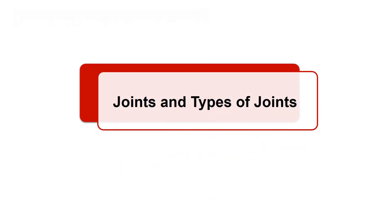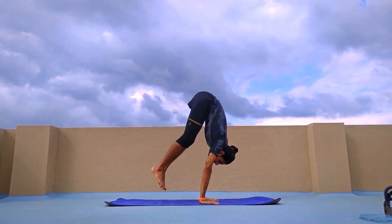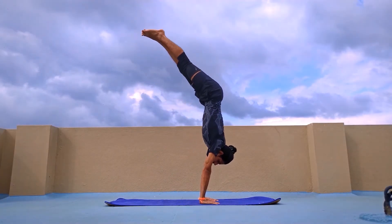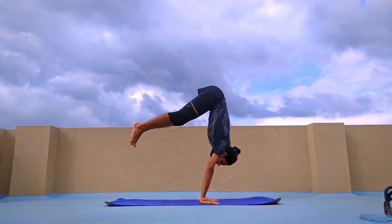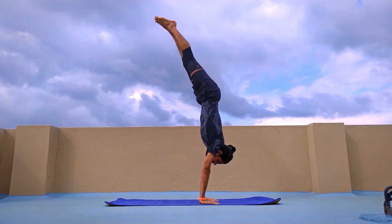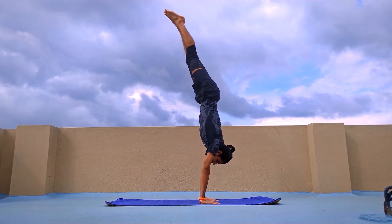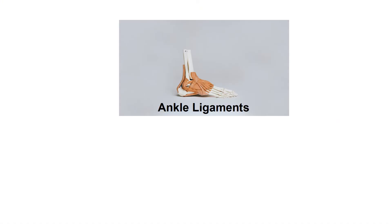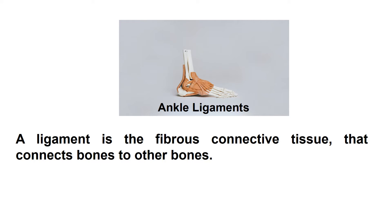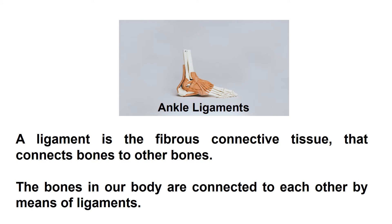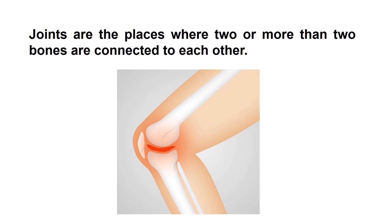Joints and types of joints. When we move the different parts of our body from the head to the toes, we observe the different places at which they can bend or turn. Before defining the term joint, we will discuss what is a ligament. A ligament is the fibrous connective tissue that connects bones to other bones. The bones in our body are connected to each other by means of ligaments. Joints are the places where two or more bones are connected to each other.